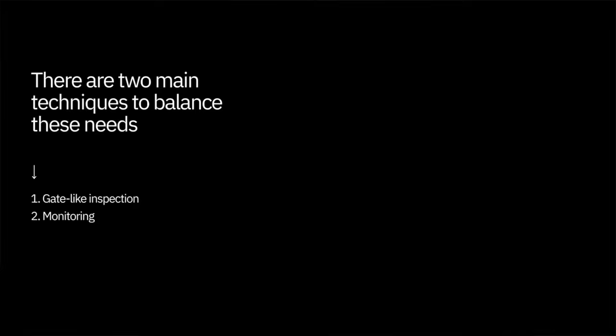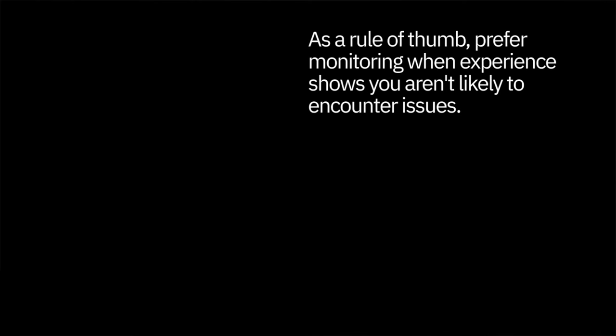So you'll need to balance improving quality while minimizing disturbances. There are two main techniques to balance these needs. One, gate-like inspection: material is held until tests are complete and then accepted or rejected — this slows down the manufacturing process. And two, monitoring: the bulk of the material flows, but you take samples to determine a failure rate. Monitoring is cheaper and has no comparable slowdown, but bad material may escape. If this happens, you'll need to reject material at a higher value stage. If the failure rate is too high, you'll need to stop production. As a rule of thumb, prefer monitoring when experience shows you aren't likely to encounter issues. Another way to reduce costs is to use variable inspection: no problems for weeks, check less often; if problems develop, test frequently until quality returns. Variable review means lower costs and interference.